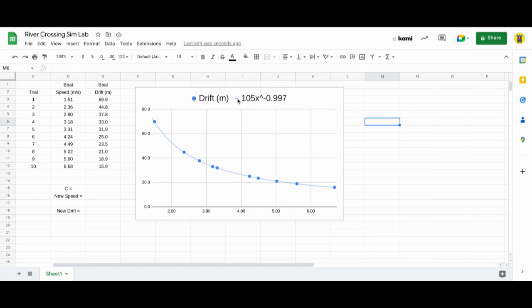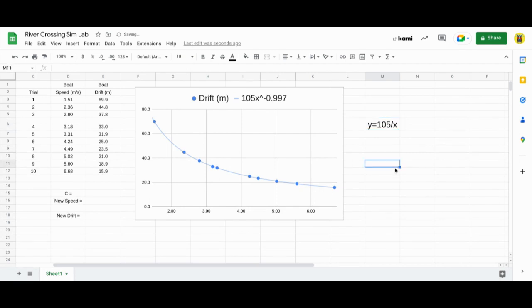So it's just 105 over x. I could write y equals 105 divided by x. That's my equation for the line right there. Let me just make that big so you can see it.